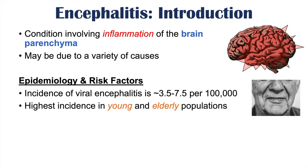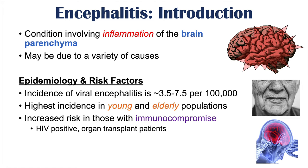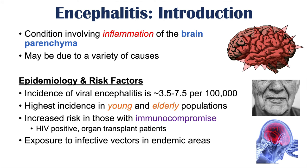This also ties in with the increased risk of encephalitis in immunocompromised patients. HIV-positive or AIDS patients and recent organ transplant patients are at increased risk. Another important risk factor is traveling to areas that have viruses that cause encephalitis — specifically, exposure to infective vectors, which are oftentimes mosquitoes in particular areas around the world that carry certain viruses that can cause encephalitis.